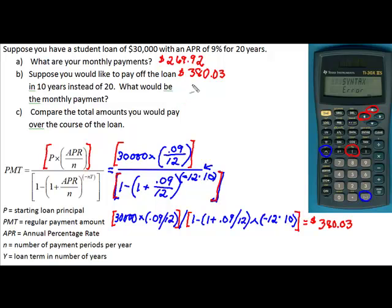If we take our monthly payment of $269.92, we know we're going to be making that payment once a month, so we're going to multiply it by 12 for 20 years. That figures to be a future value of this particular loan of $64,780.80, which means that we're paying $34,780.80 in interest on this loan.